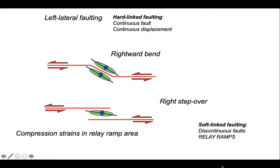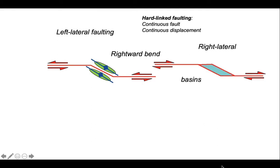Let's return to hard-linking faults and keep the same geometry but change the sense of offset. Rather than left lateral, let's make this fault geometry right lateral. In this case, the northern side of the strike-slip fault zone is moving towards the right, towards the east. As a consequence, at the bend, the two walls of the fault zone are moving apart. This will obviously generate extension, and classically these are termed pull-apart basins.